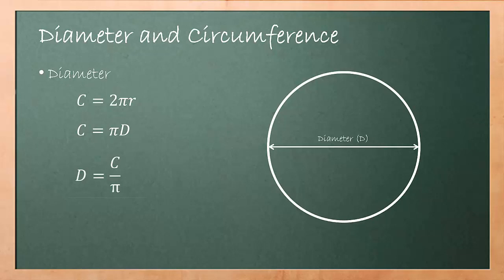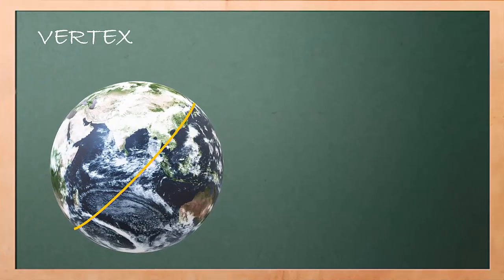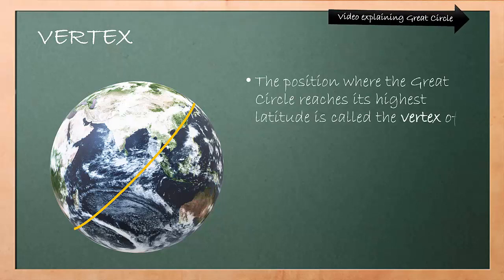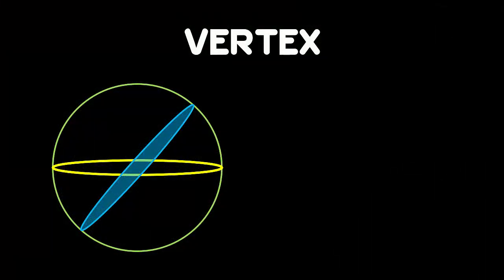Vertex. What is vertex? The position where the great circle reaches its highest latitude is called the vertex of that great circle. It exists in all great circles except equator and meridian.